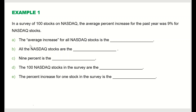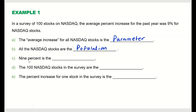The first question is: the average increase for all Nasdaq stocks is what? We are talking about the mean of everything — the mean of the population — so that is the parameter. Next, all Nasdaq stocks refers to everything, so that is your population.